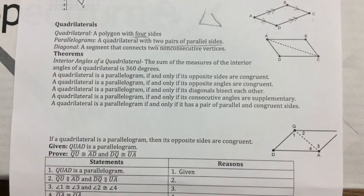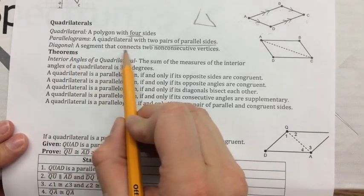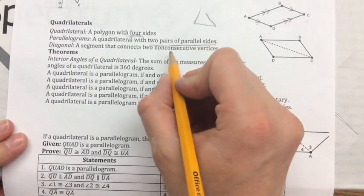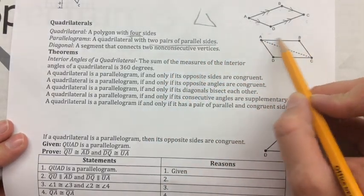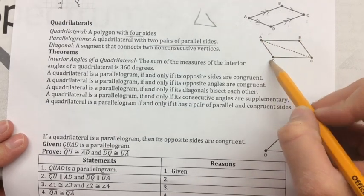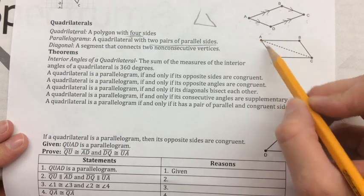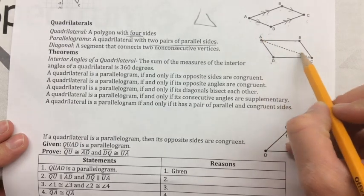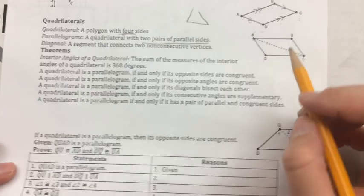We also have another vocabulary word you need to know — the diagonal. The diagonal is a segment that connects two non-consecutive vertices. Consecutive means next to each other. So in this picture, B is next to A, or consecutive, and D is also next to A, or consecutive. So we can't create a diagonal with A and D or A and B because they're next to each other. A diagonal has to go from one vertex to the non-consecutive vertices.